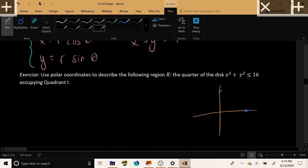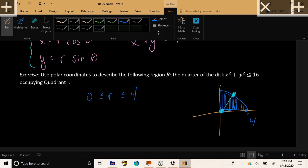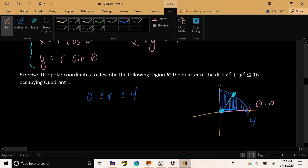We have the quarter of the disk of radius 4 that occupies quadrant 1. Among all the points in this disk, the radius can vary from 0 here at the origin, and at its largest the radius can be 4, which is on the rim of the disk. If I think about the permitted values of theta, theta can go from theta equals 0 here on the positive x-axis, all the way up to theta equals pi over 2.